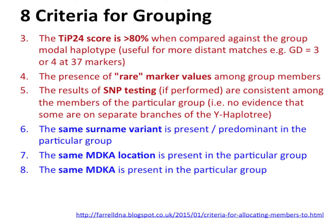The third criterion is the TIP24 score — greater than 80% when compared against the group modal haplotype. TIP stands for Time Predictor, and it measures the probability that two people are connected within a certain number of generations. Using this tool gives you a percentage probability of relatedness at 4, 8, 12, 16, and 24 generations. We only use the 24-generation time point, and we're interested in the actual percentage at that cutoff as a measure of relatedness.